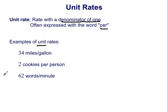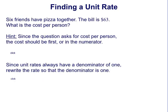Here's an example of a situation we can represent using a rate. Six friends have pizza together and the bill is $63. What is the cost per person? Since the question asks for cost per person, the cost goes first — in the numerator — because it was asked first. The cost is $63 and the number of people is six.